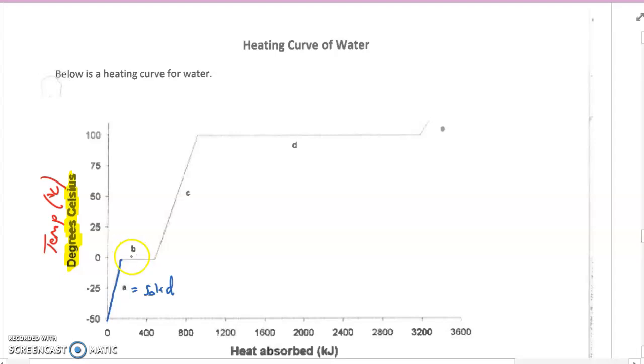So this plateau, labeled as B, is the phase change in between a solid, and then the next sloped line, which is labeled as part C, this is a liquid. So this would be our liquid water.